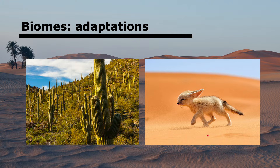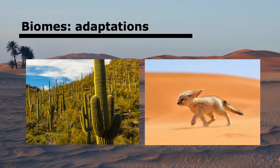The fennec fox is nocturnal to avoid the highest temperatures and builds underground dens to stay cool during the day. It has long thick hair for insulation and a very variable ventilation rate, which can be used to cause heat loss by evaporation during extremely high temperatures.